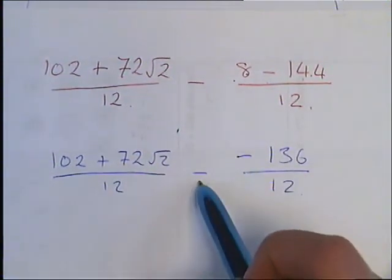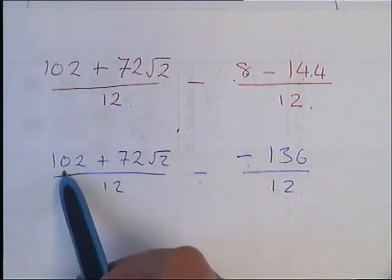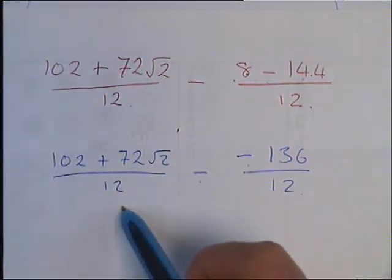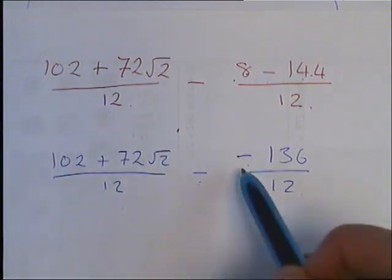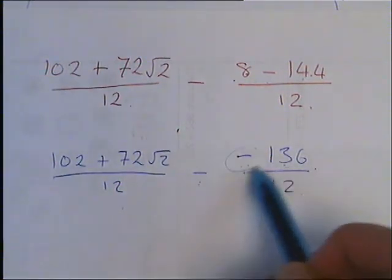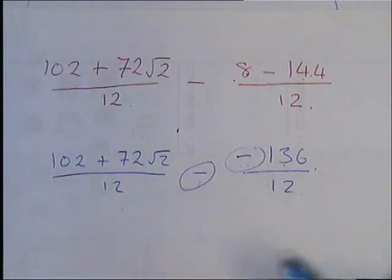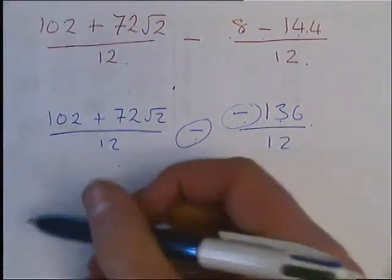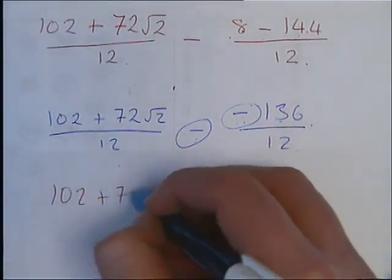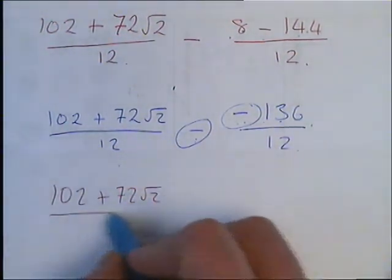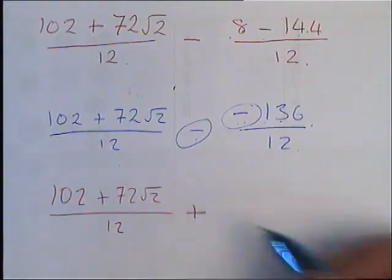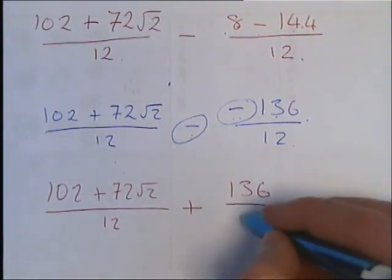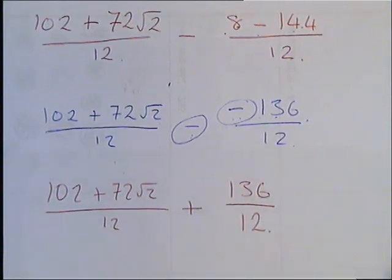And now you'll notice we've got a minus minus. So we've got 102 plus 72 root 2 over 12, minus minus 136. So because we've got these two minuses, we can turn them into a plus.